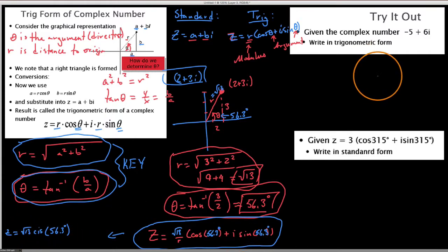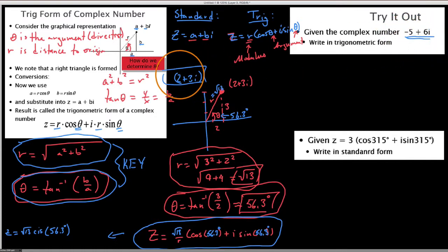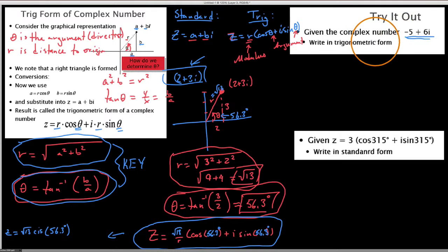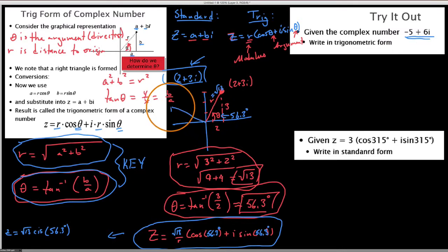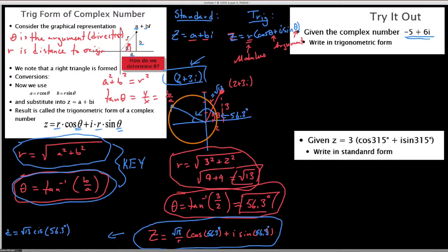Now I had another complex number listed that has an angle not in the first quadrant. When you go left and up, you have an angle that is bigger than what you get from the inverse tangent alone. So when the number is not in the first quadrant, you have to be careful — the tangent inverse only gives a reference angle.